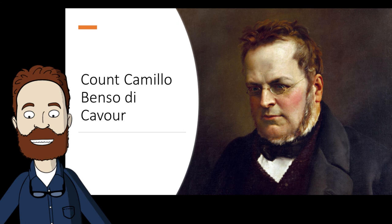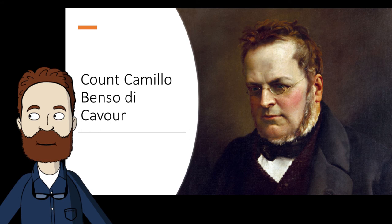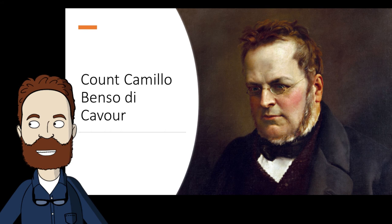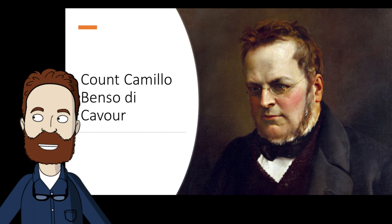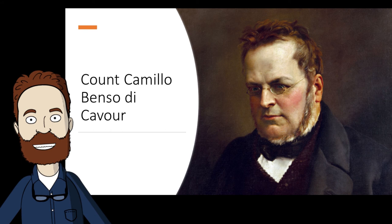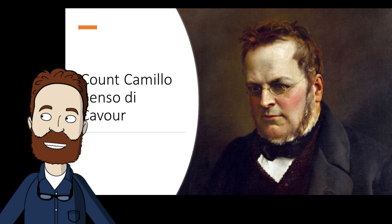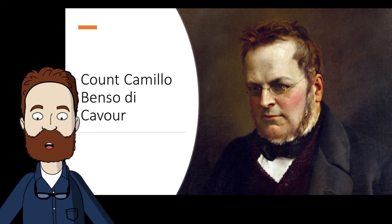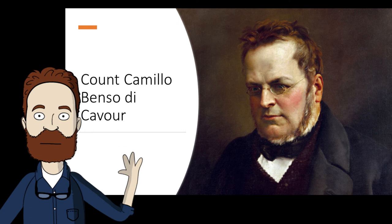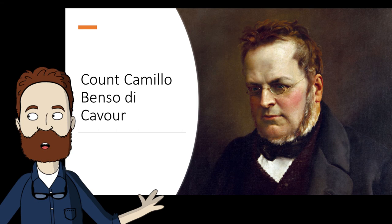One of the few centers of independence that still remained was Sardinia — the island and its counterpart, Piedmont. Its young king, Victor Emmanuel II, refused to withdraw the liberal constitution granted by his father. So it would be Sardinia that the Italian unification movement would find its base and its next leader.